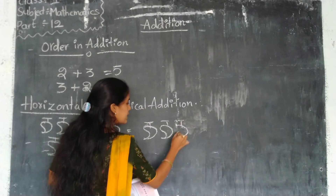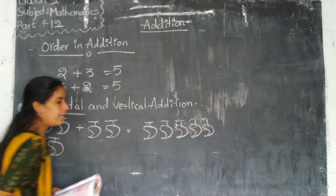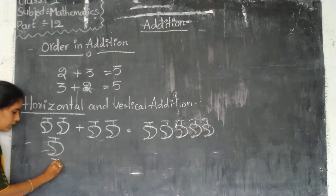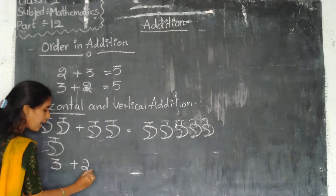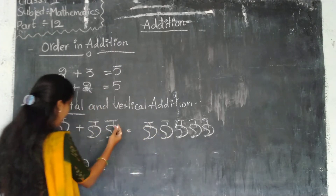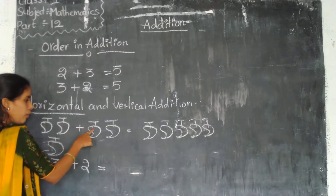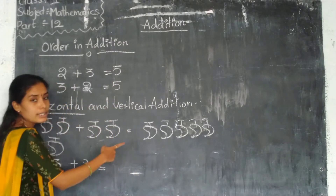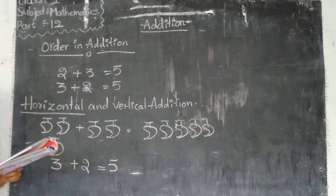It is mangoes. In the first picture, how many mangoes are there? Three. Plus, in the second picture, we have two mangoes. So finally, how many in total? One, two, three, four, five. Three plus two equals five.